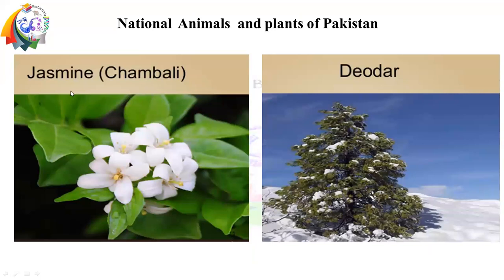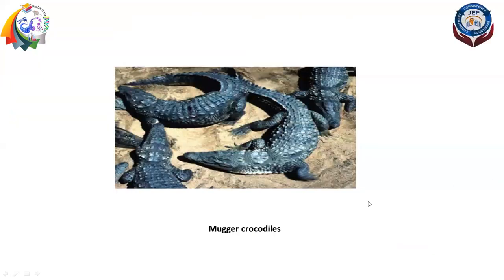We also call it jasmine — this is our Common Jasmine, the national flower. The jasmine and the northern area's Deodar is our national tree. Here is the Mugger Crocodile, which is in a very critical situation in Pakistan. Unfortunately, this species has not been seen freely in forests — it is a highly critically endangered species in Pakistan. This is our national reptile, the Mugger Crocodile.